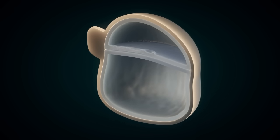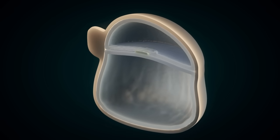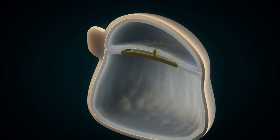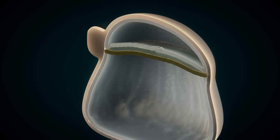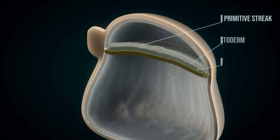Three germ layers form from the primitive streak and node. This process is called gastrulation. The germ layers ectoderm, mesoderm, and endoderm eventually differentiate into various tissues and organs.